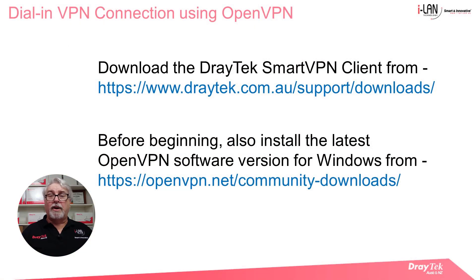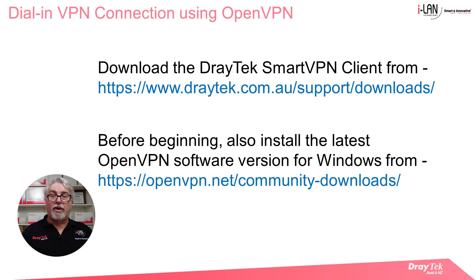Note that you will need to install OpenVPN Client version 2.4.84 for Windows 10 from openvpn.net/community-downloads, or you won't see the OpenVPN type as an option in the SmartVPN client.